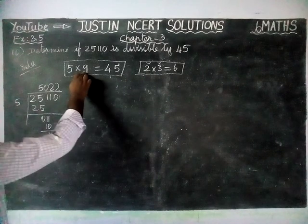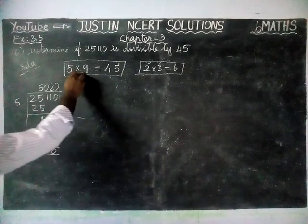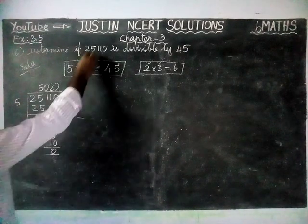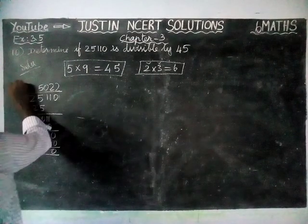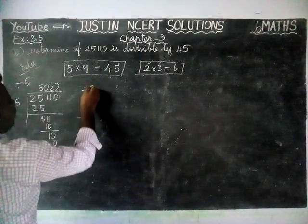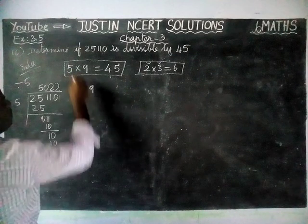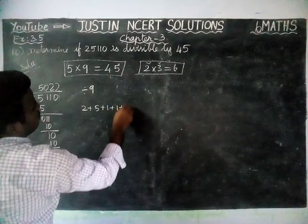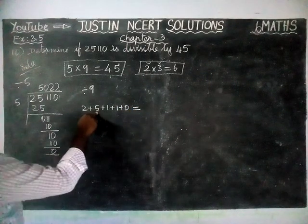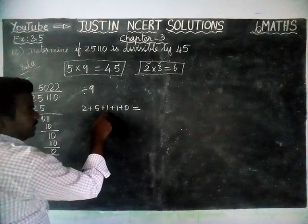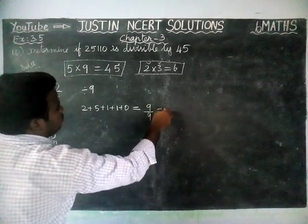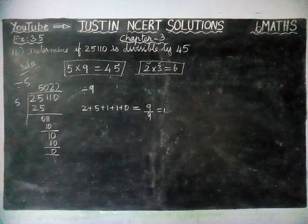Next, we are going to check it for 9. According to the divisibility rule for 9, if the sum of its digits is divisible by 9, that number is divisible by 9. Sum of digits: 2 + 5 + 1 + 1 + 0 = 9. Since 9 divided by 9 equals 1, the sum of digits is divisible by 9.